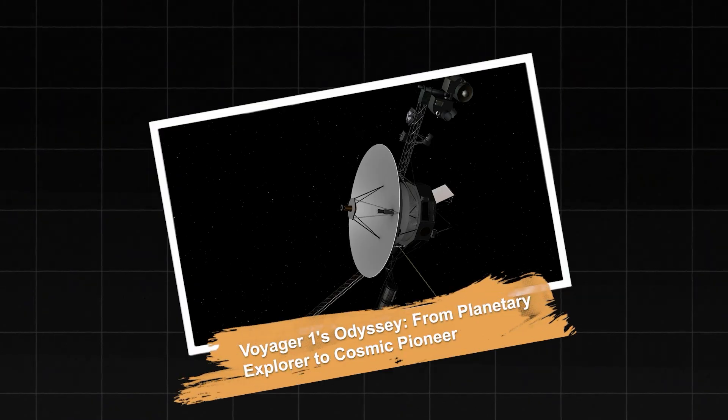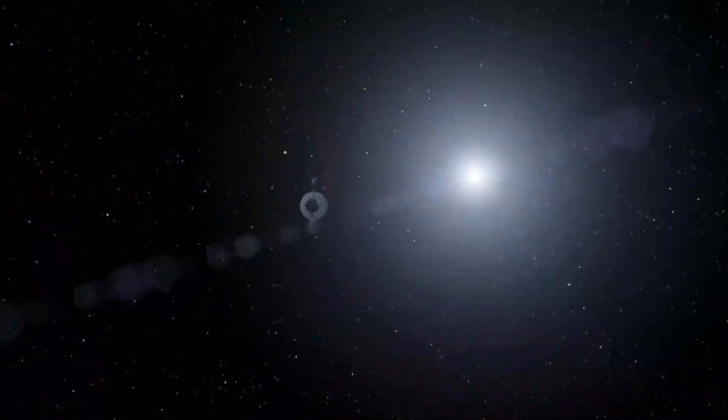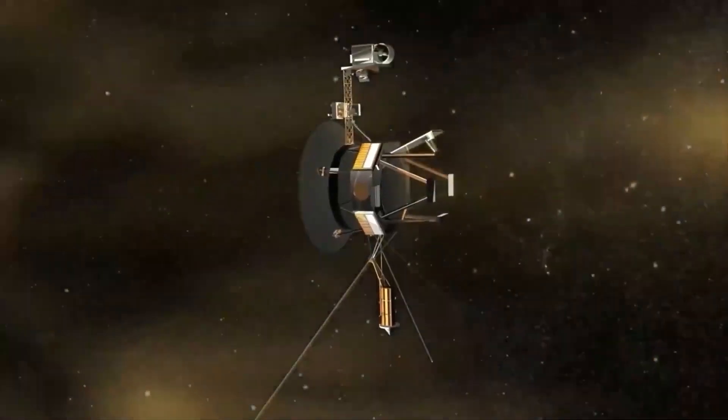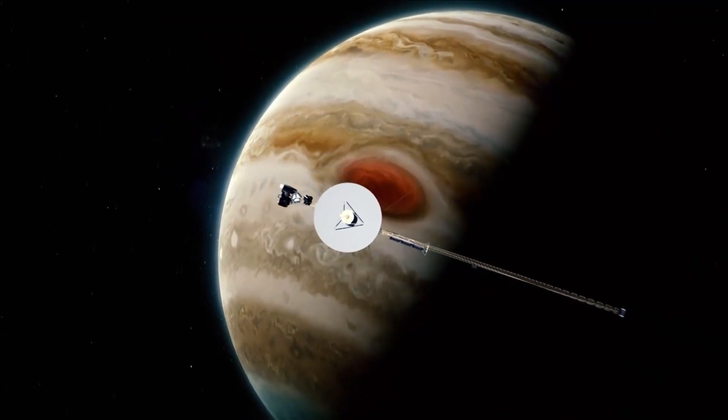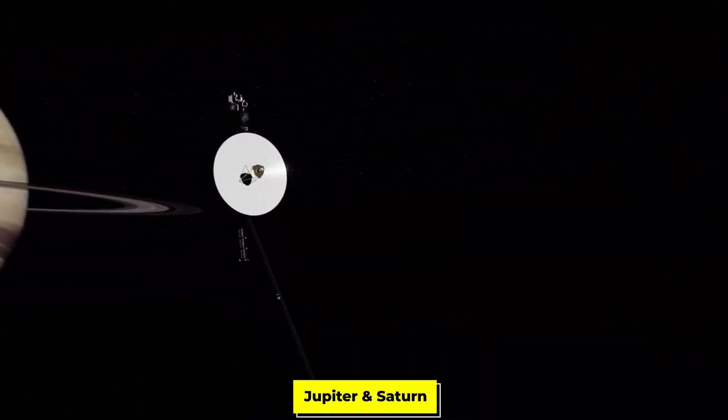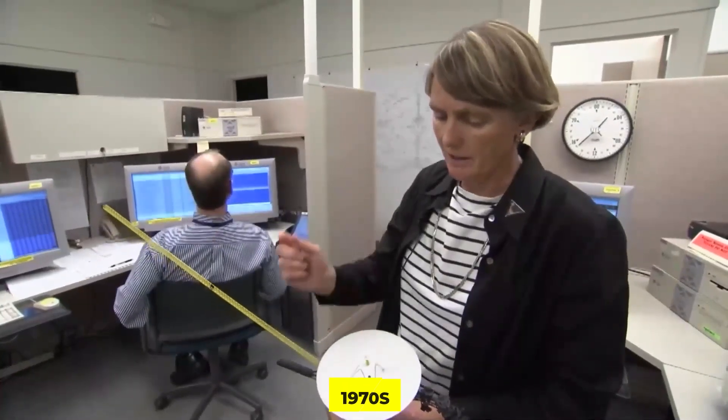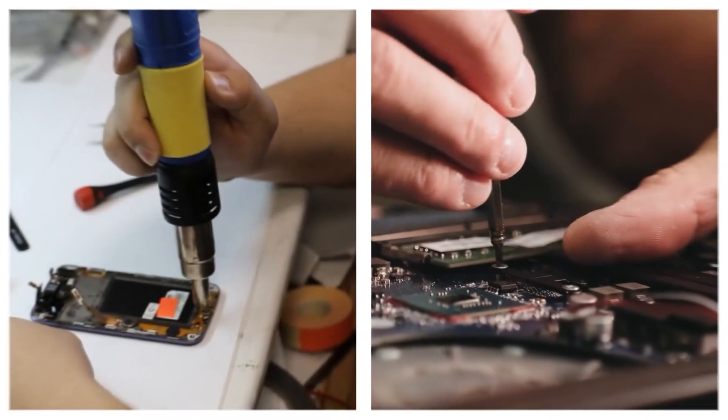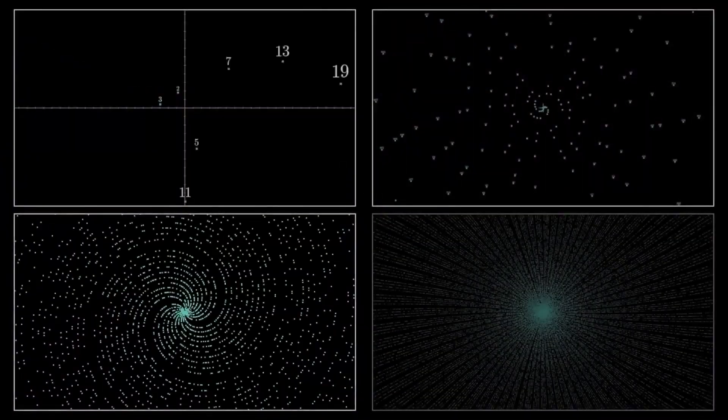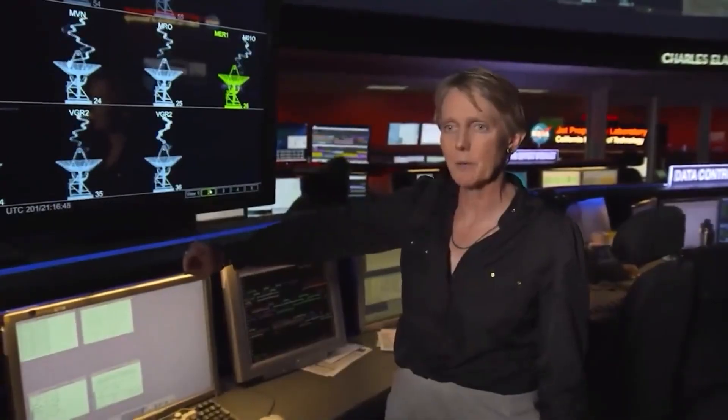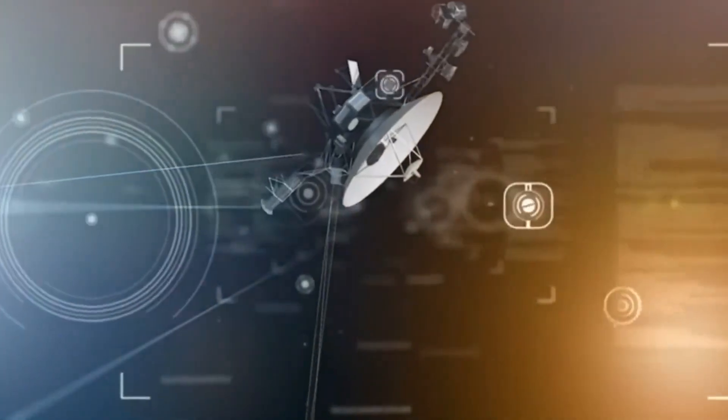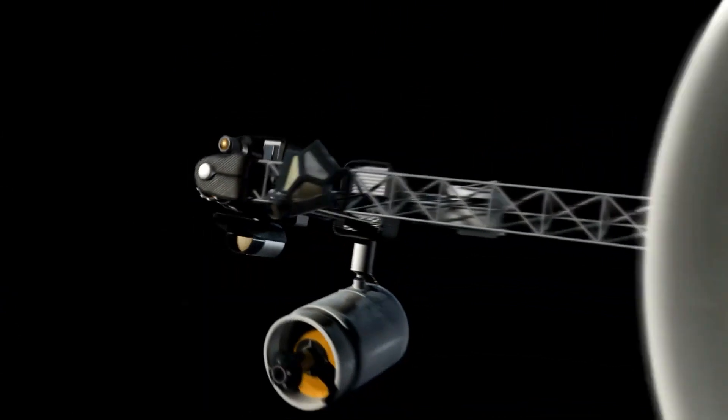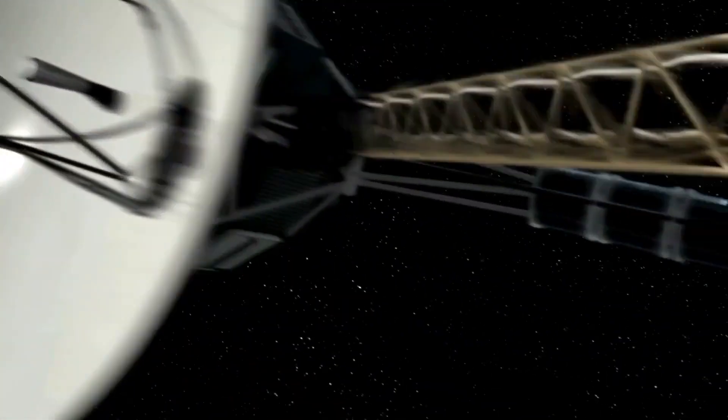Voyager 1's Odyssey: From planetary explorer to cosmic pioneer. The Voyager 1 spacecraft's journey represents one of humanity's greatest engineering achievements. Launched on September 5, 1977, the probe was originally designed for a four-year mission to study Jupiter and Saturn. Built with 1970s technology, including computers with less processing power than a modern smartphone, Voyager has far exceeded its expected lifespan, continuing to send back data from the interstellar medium nearly half a century later. The spacecraft's remarkable longevity is due to its radioisotope thermoelectric generators, which convert heat from decaying plutonium-238 into electricity, and its robust construction designed to withstand the harsh conditions of space.